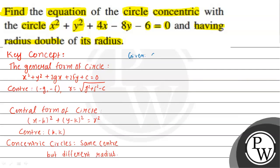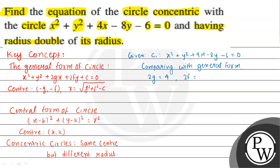Let us consider the given circle as C1: x² + y² + 4x - 8y - 6 = 0. Comparing to the general form, the coefficient of x is 2g = 4, the coefficient of y is 2f = -8, and the constant term c = -6. So g = 2, f = -4, and c = -6.